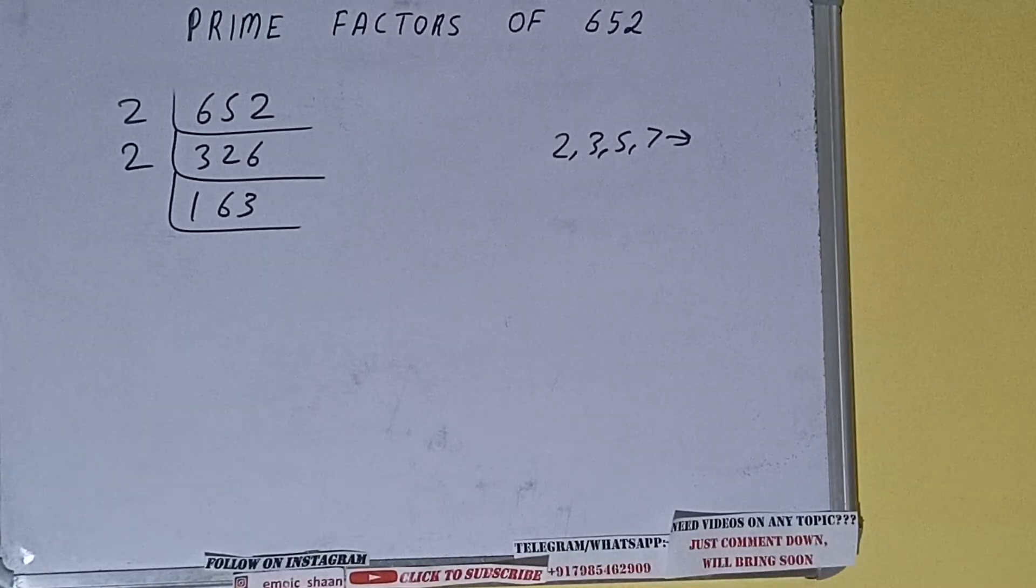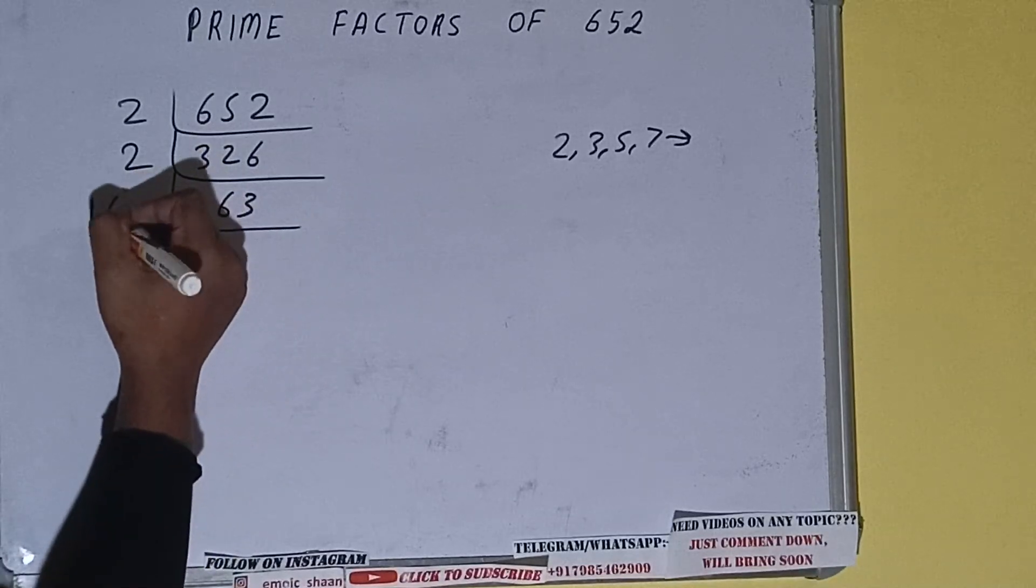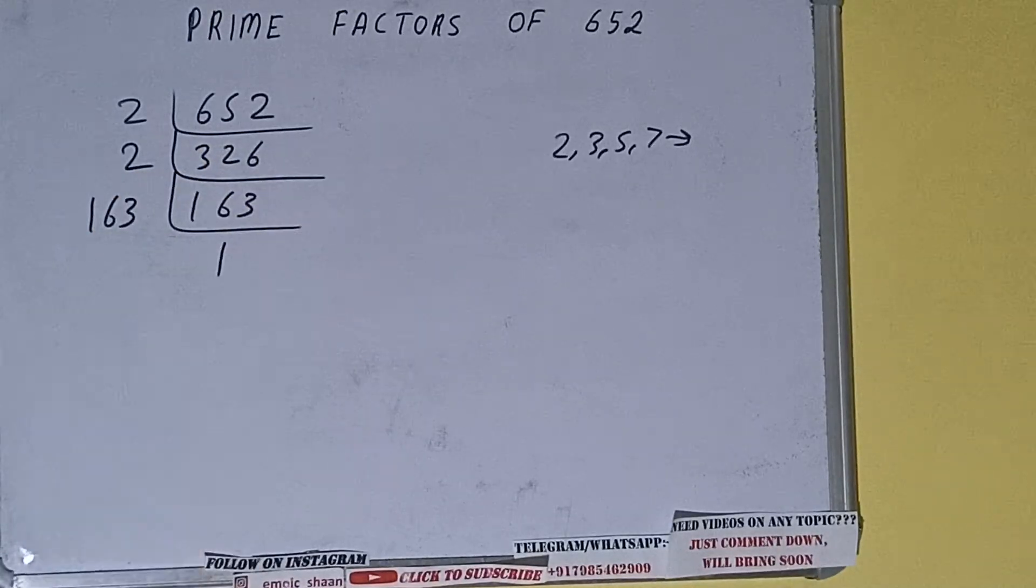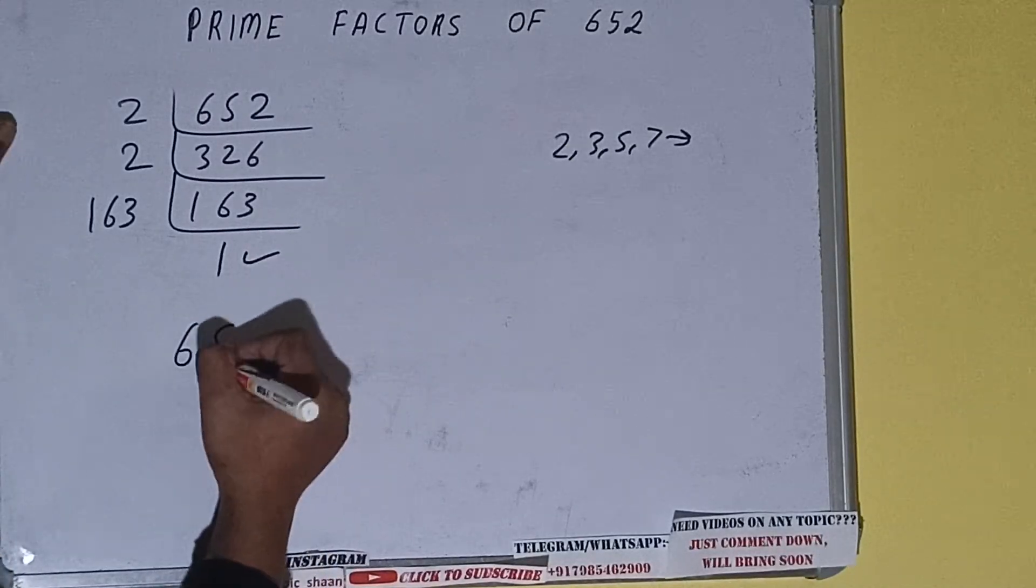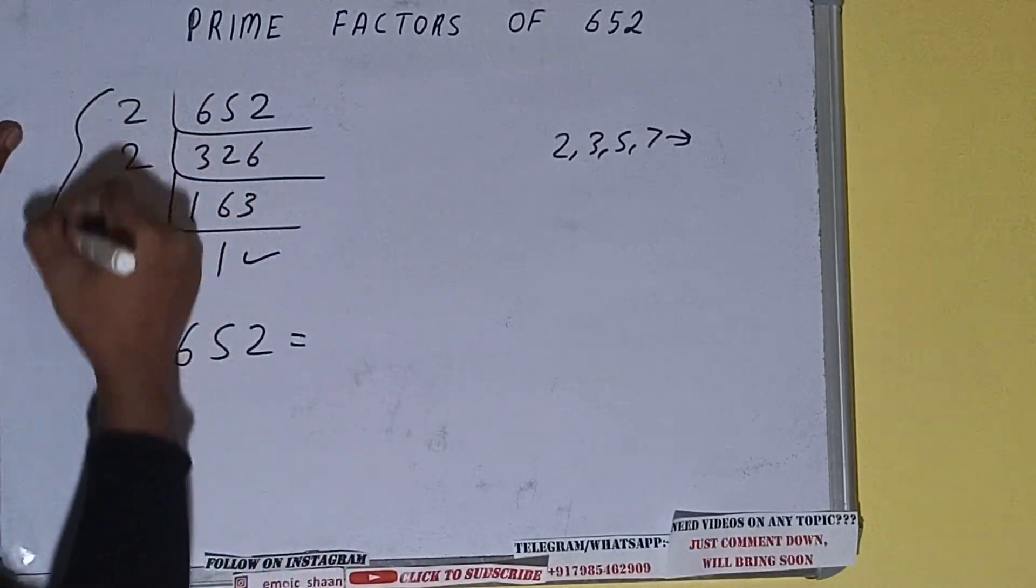163 is also a prime number, so it is only divisible by itself, that is 163. And once we do so, we'll be getting 1. Once we get 1, we need to stop and do one last thing.